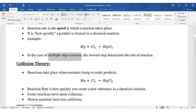So basically, reaction rate is the speed at which a reaction takes place. So in multiple step reactions, the slowest step usually determines the rate of reaction. Next is collision theory. Collision theory tells us how quickly the reactants convert into fast reactions.